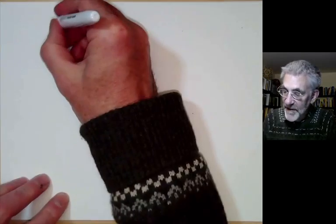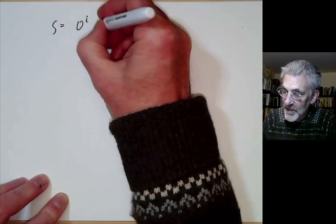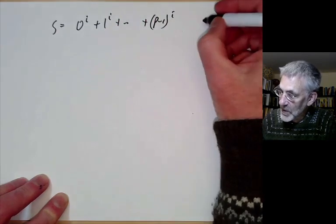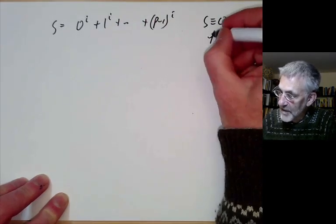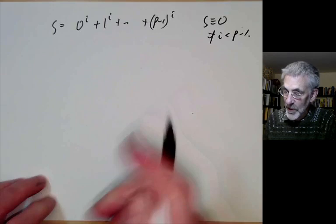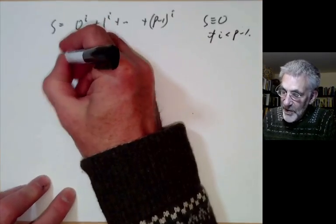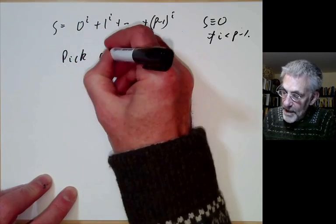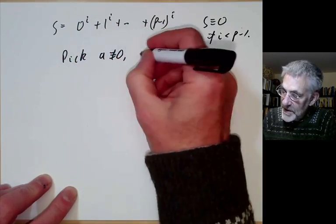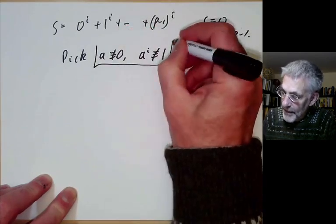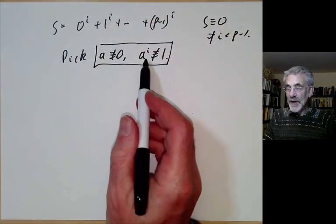Let's write s for this sum: 0^i + 1^i + ... + (p-1)^i. We want to show that s is congruent to 0 if i is less than p-1. Now what we're going to do is pick some a not congruent to 0 such that a^i is not congruent to 1.